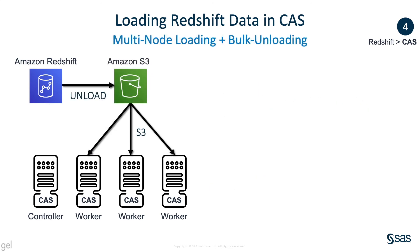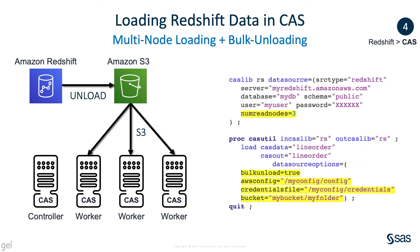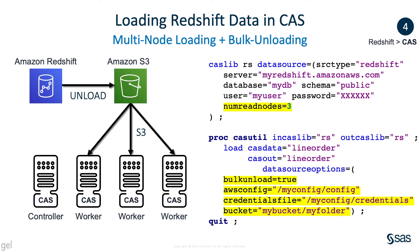We can go further and use a bulk unload technique to speed up the loading phase. Instead of using SQL to extract the data, the Redshift table is staged on S3 before being pushed to each CAS worker. In addition to the NumReadNodes option, bulk unload options are set either in the CASLib statement or in the CASUtil procedure. The AWSConfig and Credential Files options manage where to find the appropriate AWS keys to access S3.